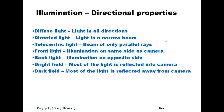In the next slides I'll present the principle of using the directional properties of light. Diffused light means light in all directions. Directed light means light in a narrow beam. Telecentric light is a beam of only parallel light rays. Front light means the illumination is on the same side as the camera. Backlight means illumination is on the opposite side behind the object. Bright field means most light is reflected into the camera, and dark field means most light is reflected away from the camera.